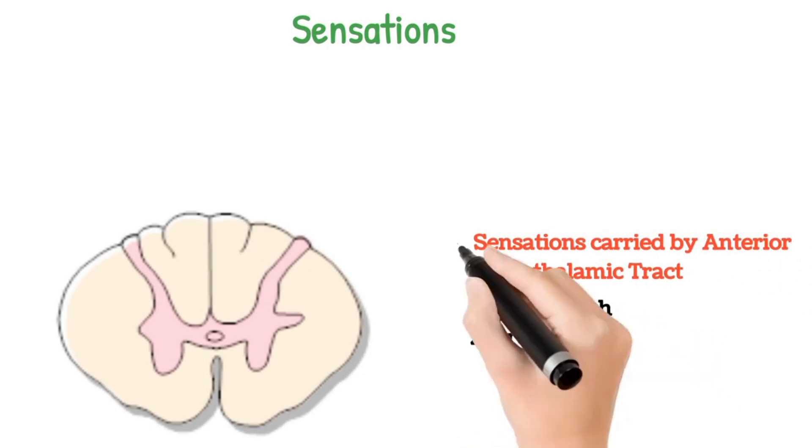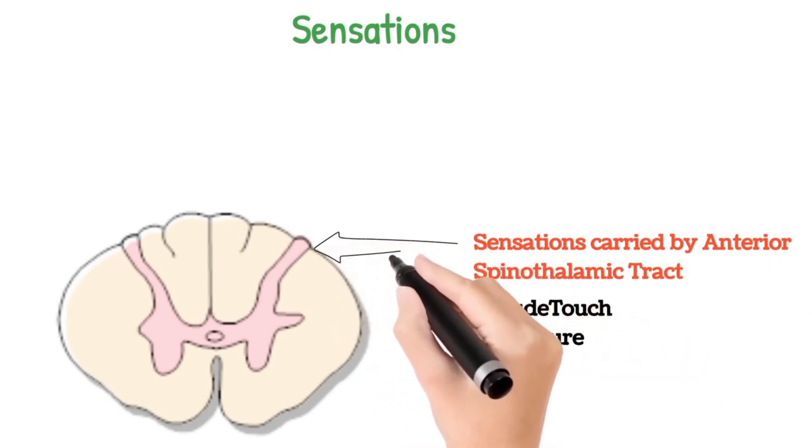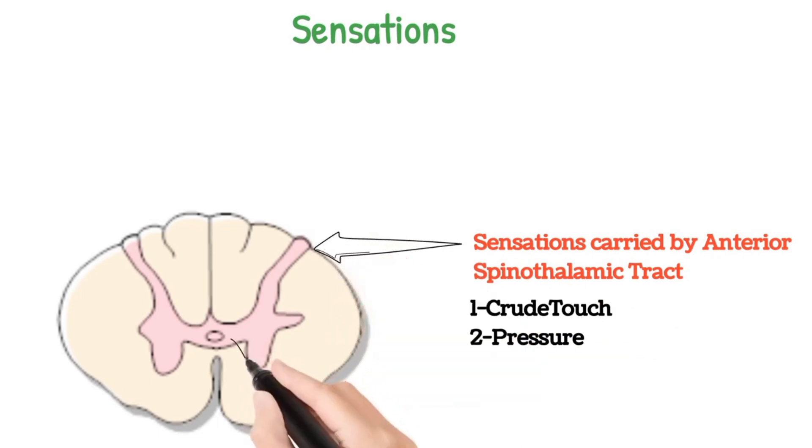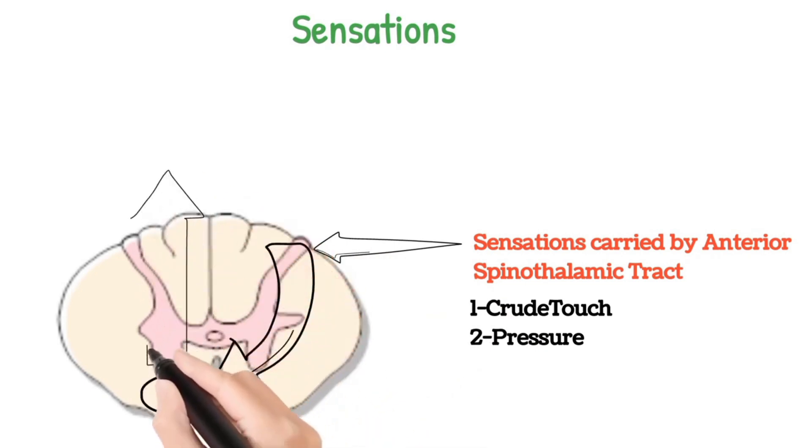These sensations are carried by nerve fibers through the dorsal root to the posterior horn. After synapse, the fibers decussate to the opposite side to the anterior spinothalamic tract and then ascend upwards towards the thalamus and brain.